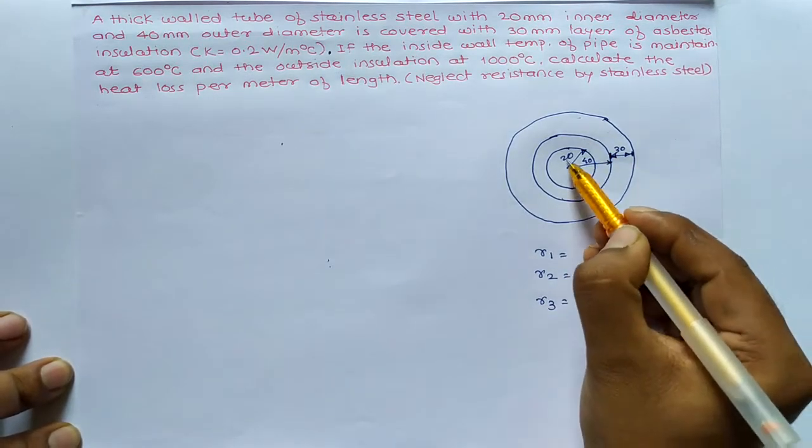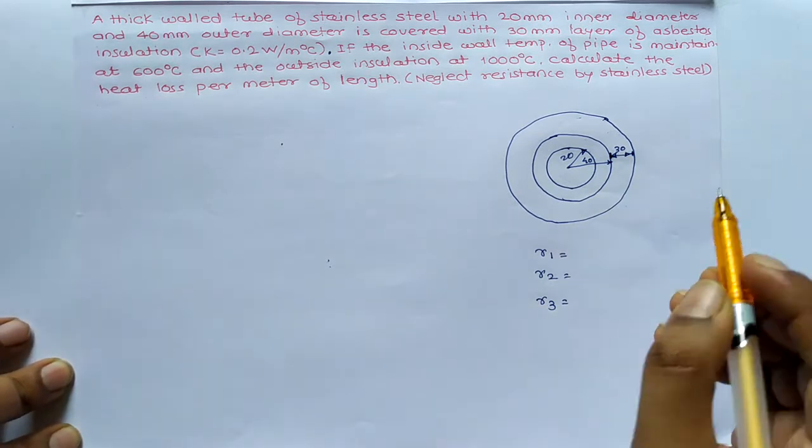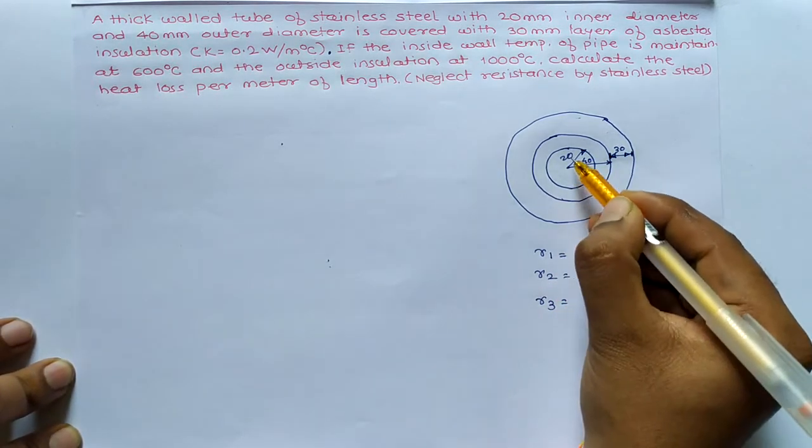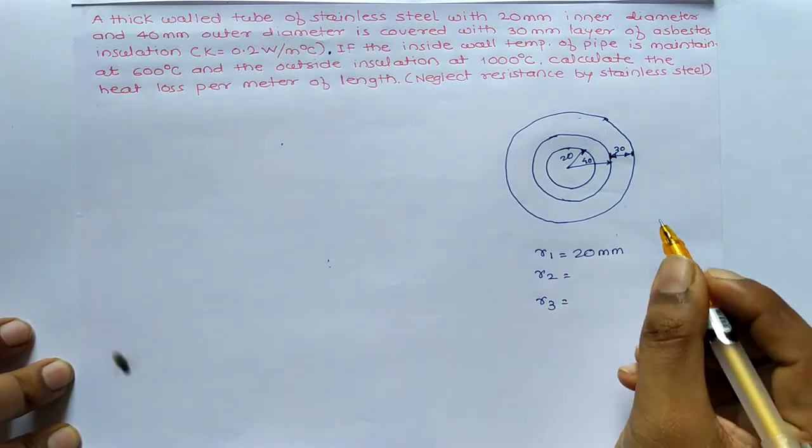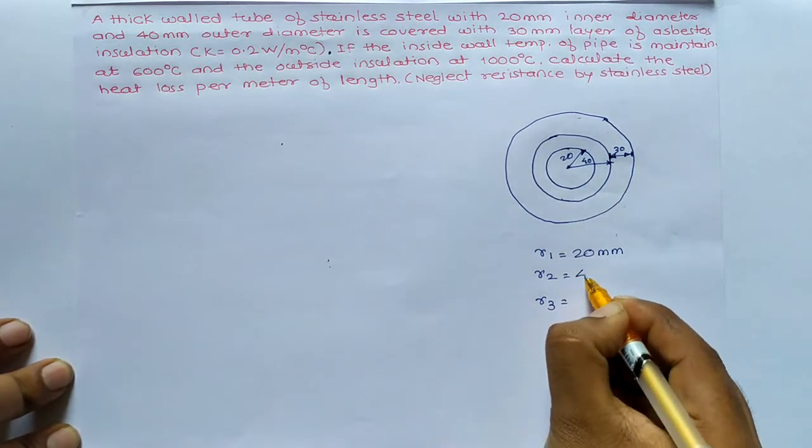All these values are in millimeter. Remember this one. So what will be the R1? Yes, it is 20mm. 20mm is R1. 40mm is R2.